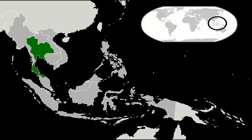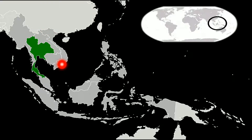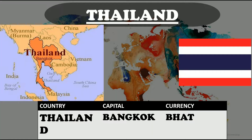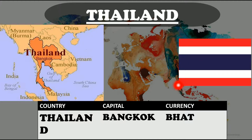Starting with the very first country, we have Thailand. Next to Myanmar we have Thailand — a country at the center of the Indochinese Peninsula in Southeast Asia. This is the map of Thailand. Its capital is Bangkok, which is over here. Its currency is Baht. And this is the flag, which has strips in the colors of red, white, blue, white, and red, with the central blue strip being twice as wide as each of the other four.